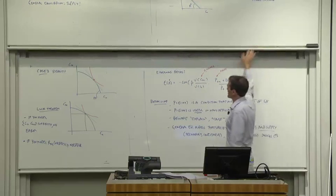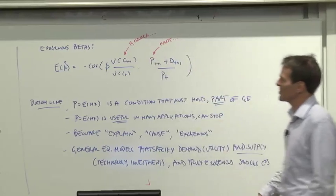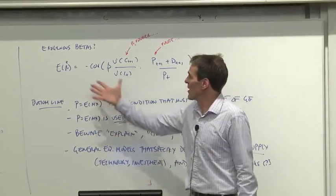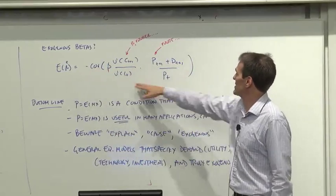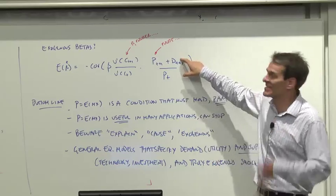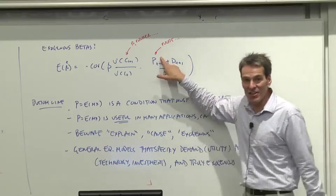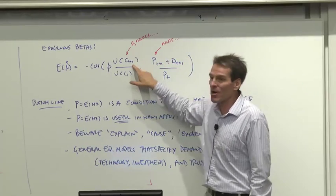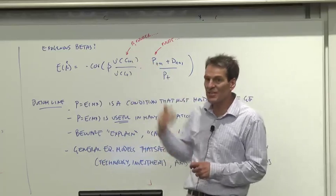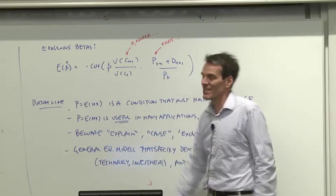Same thing. We have taken our betas as exogenous. We've thought about the covariance of consumption growth with returns as determining expected returns, but nothing of the sort is true. Let's write out expected returns as covariance of discount factor with tomorrow's return. And even if we think the dividend is exogenous, a fixed cash flow, which we just model, well, tomorrow's price is as endogenous as it can possibly be. And tomorrow's consumption reflects consumers' expectations of future returns, consumers' expectations of the future. That's as endogenous as it could possibly be. So this stuff is endogenous as well.